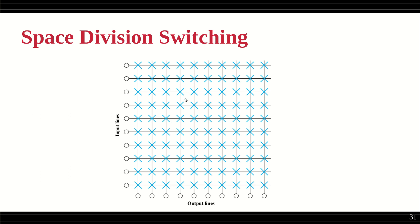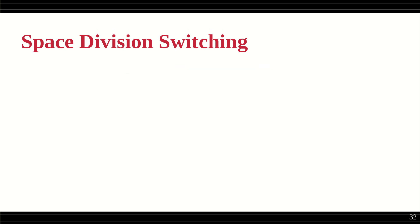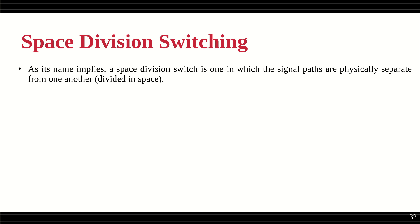How many cross points are needed in this example? There will be 10 by 10, so we need 100 cross points. That makes for a complex circuit. We can reduce this number of cross points if we think of a different kind of switching strategy called a multi-stage switch, which we will see after this.